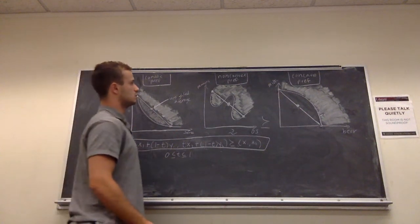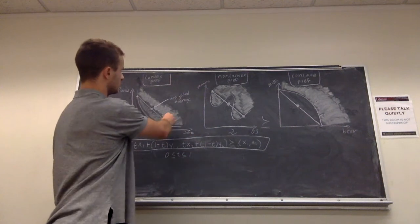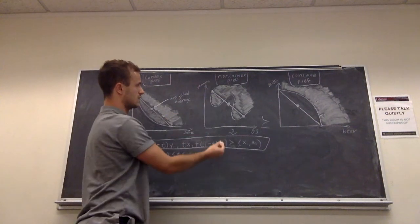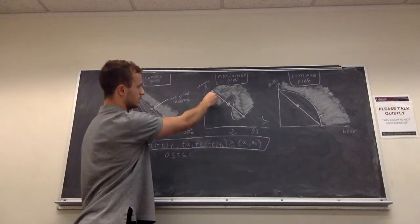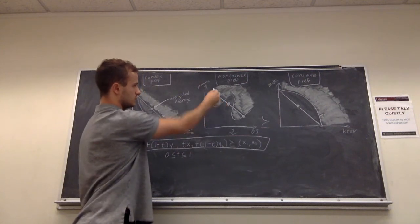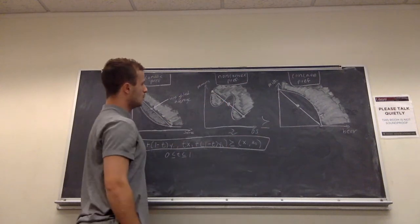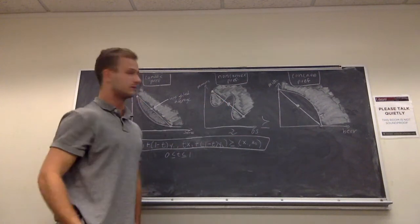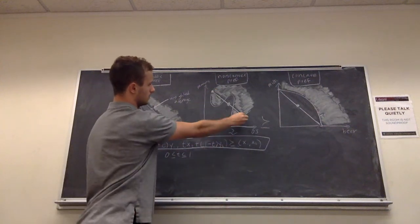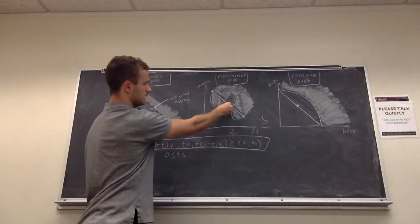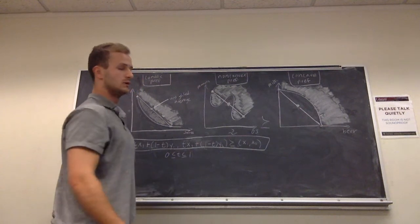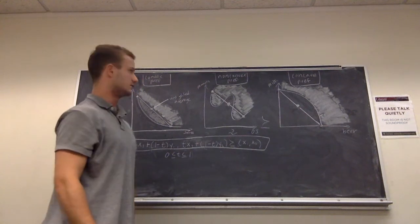Non-convex is a sort of mix — a less extreme version of this — in the sense that sometimes we want the weighted average. For example, if we had two points here and here, we want to consume the weighted average here. But also we may not want to do that, so we may consume here. We may have these two goods and the weighted average being in the middle inside the graph would be undesirable to us as we would get less utility from that.